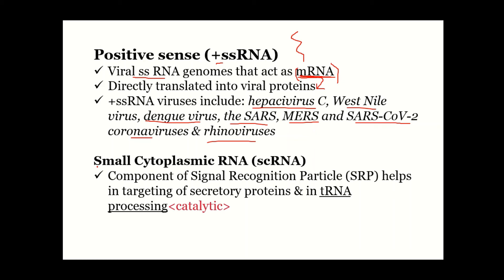We have another small RNA called small cytoplasmic RNA, which is a component of the Signal Recognition Particle, or SRP. It helps in the targeting of secretory proteins and also in tRNA processing. You can read further about what secretory proteins are.